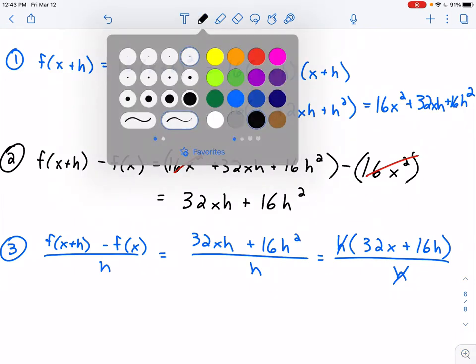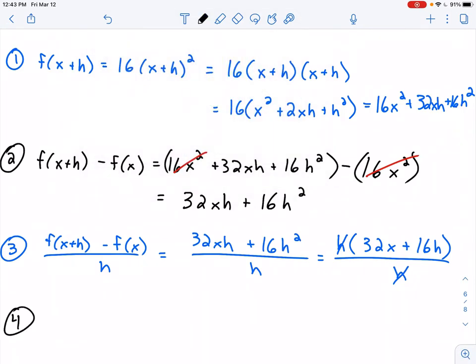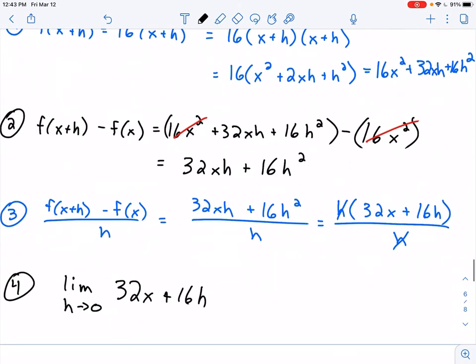Step four: apply the limit. Take the limit as h approaches zero of what we found in step three, which was 32x + 16h. I'll plug in zero for h. This is a straightforward limit to evaluate: 32x + 16(0). 16 times zero is zero, which drops off, leaving 32x. That is the derivative, f'(x) = 32x.